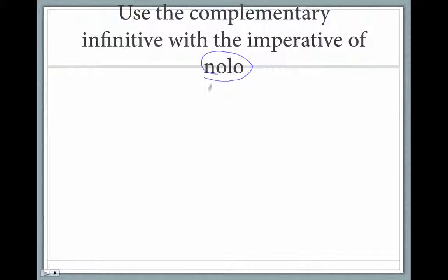So you've just learned nolo means not wish, but if you use the imperative singular noli and the plural nolite with an infinitive, you're going to tell somebody not to do something.